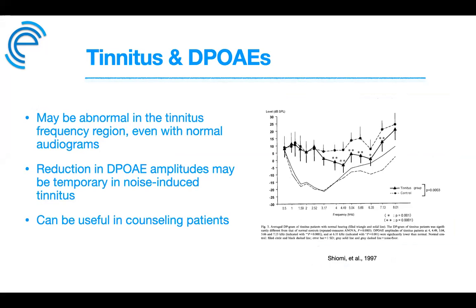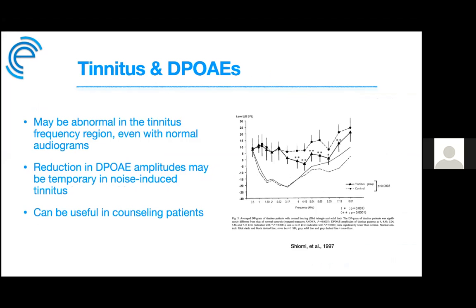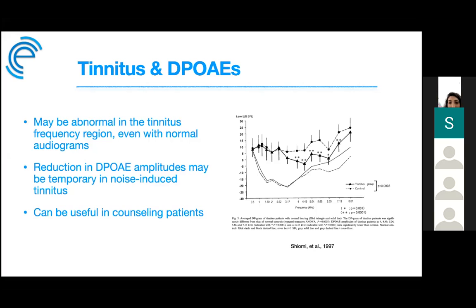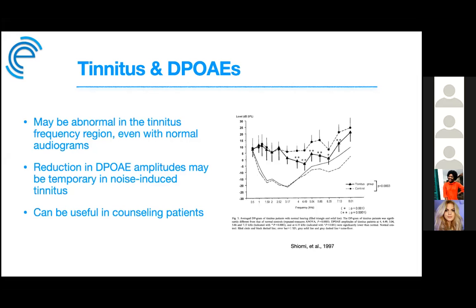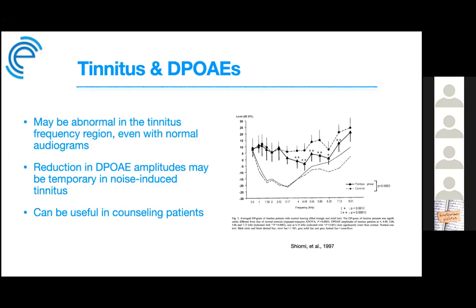Regarding tinnitus: it has been theorized to originate in both the cochlea and the central auditory system, often involving damage to the outer or inner hair cells or both, leading to peripheral deafferentation and the beginning of tinnitus perception. OAE abnormalities are a common finding in people with debilitating tinnitus, shown in studies by Ceranic in 1995, Hall in 2000, and Shlomo in 1997. It is relatively rare to find someone with tinnitus who has a completely normal DPOAE measurement — this is why OAE measurement is incorporated into the clinical diagnostic assessment of tinnitus.